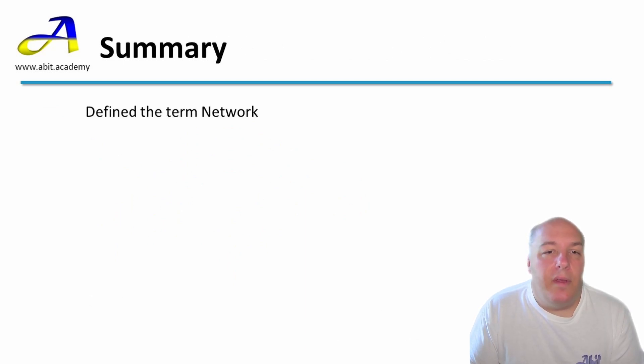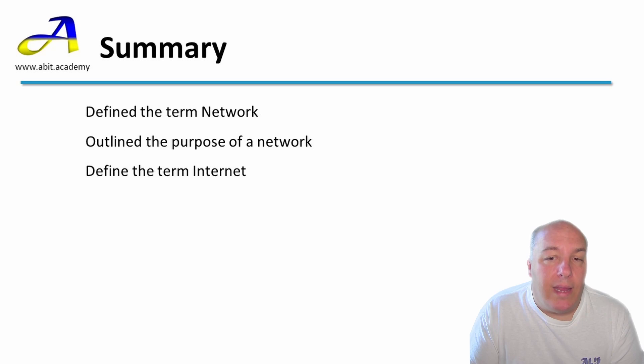In summary, we defined the term network, outlined the purpose of a network that has to share and access data and devices securely. We defined the term internet, identified some of the main uses like World Wide Web or Web for short, VoIP, which stands for voice over IP or internet protocol, allowing you to make phone calls over the internet with services like Skype. Then there's email and IM with services such as WhatsApp.